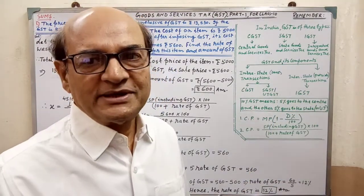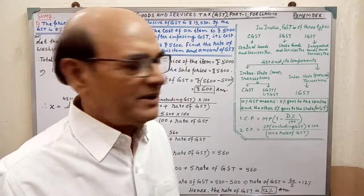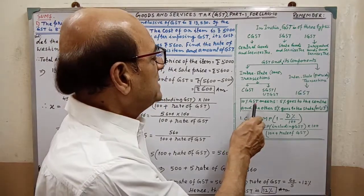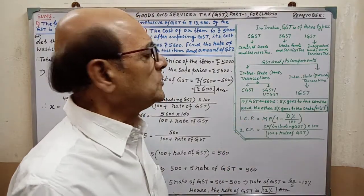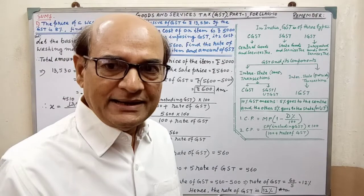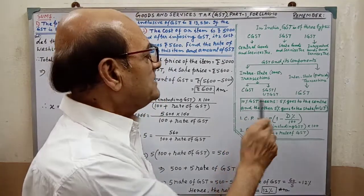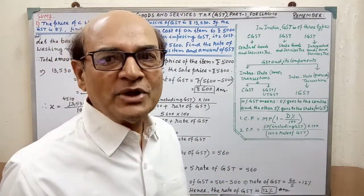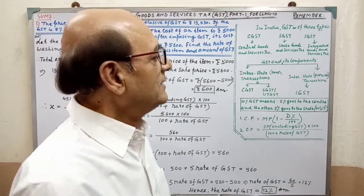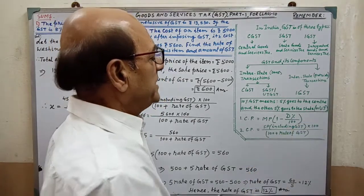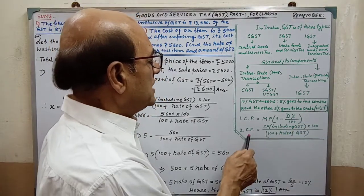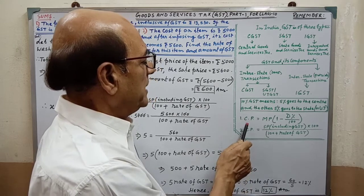These are the terms you have to remember. After that, 10% GST means 5% goes to the center and the other 5% goes to the state or Union Territory. There are two formulas you have to remember.